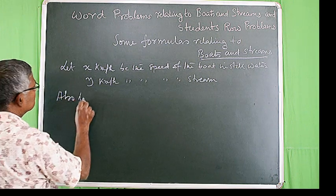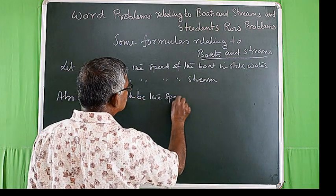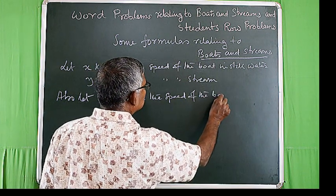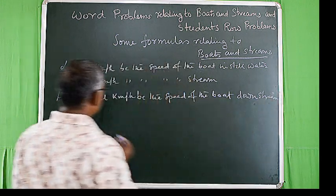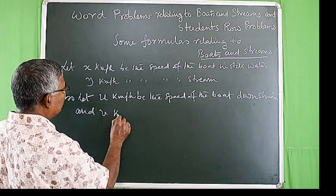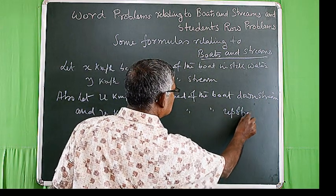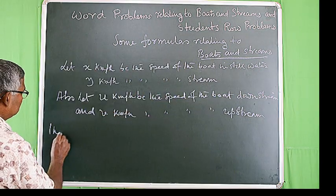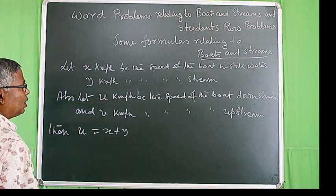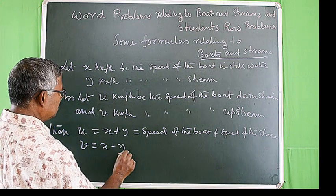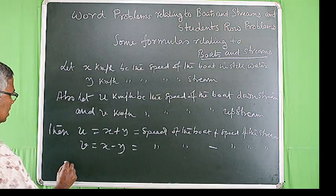Also let u kilometer per hour be the speed of the boat downstream and v kilometer per hour be the speed of the boat upstream. Then speed of the boat downstream: u = x + y kilometer per hour. Again v = x - y, that is speed of the boat minus speed of the stream.